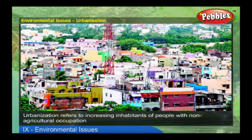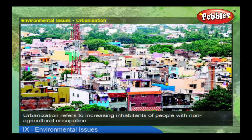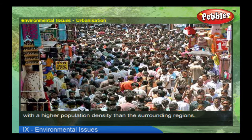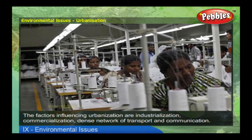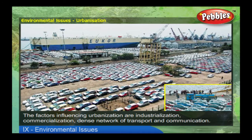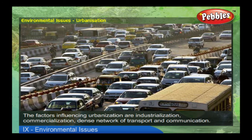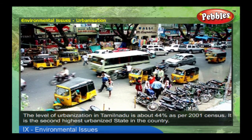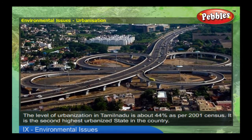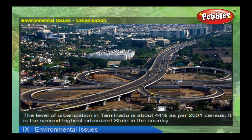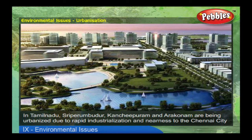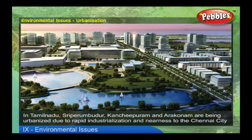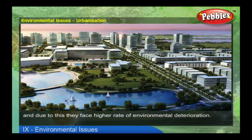Urbanization refers to the increasing number of inhabitants with non-agricultural occupation in areas of higher population density than the surrounding regions. The factors influencing urbanization are industrialization, commercialization, and a dense network of transport and communication. The level of urbanization in Tamil Nadu is about 44% as per the 2001 census, making it the second highest urbanized state in the country. In Tamil Nadu, Sri Perambudur, Kanchipuram, and Arakonam are being urbanized due to rapid industrialization and nearness to Chennai, and as a result they face a higher rate of environmental deterioration.